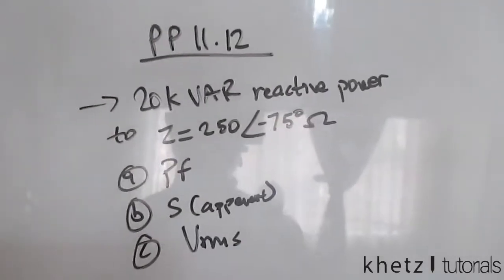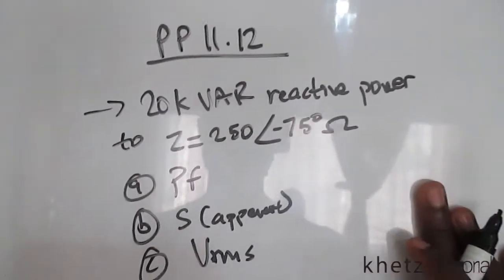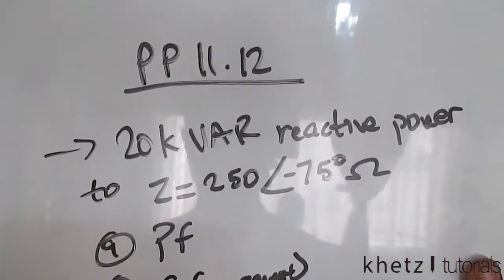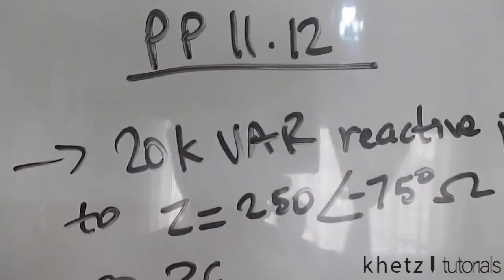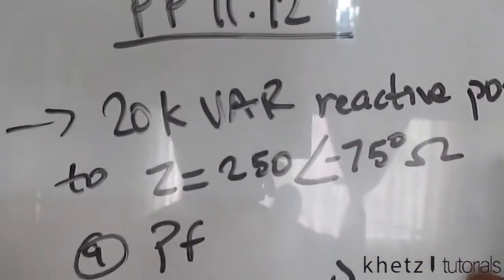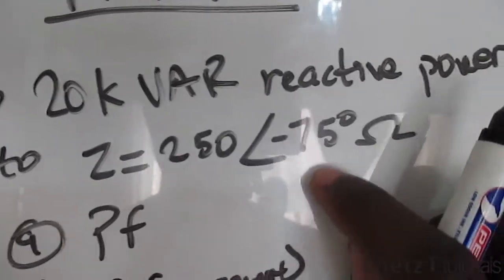Welcome to Khetz tutorials. In this video I'll be covering practice problem 11.12. We're told that the sinusoidal signal supplies 20,000 VAR reactive power to a load of Z equals 250 angle negative 75 degrees in ohms.